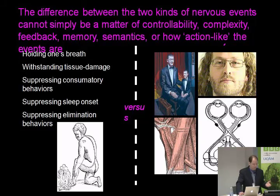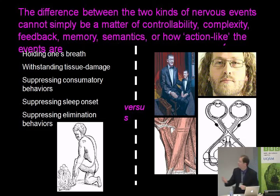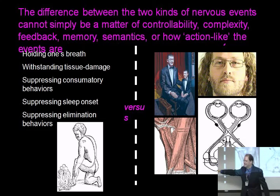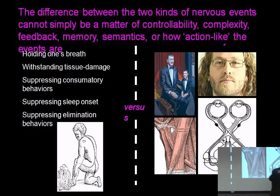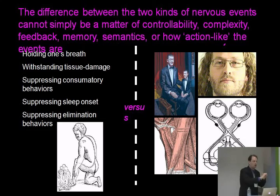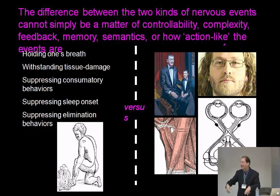There's Descartes' pain, ventriloquism, the McGurk effect, pupillary reflex, and the control of smooth and skeletal motor muscle. So what's the difference between these? It turns out the difference is not a level of control, not a level of complexity, not semantics, not a level of feedback — these things you find in both.